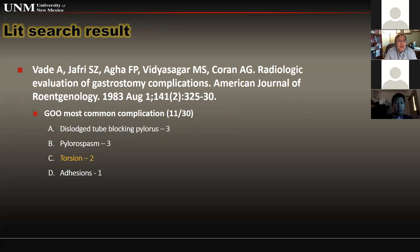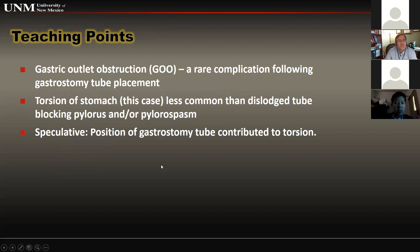A literature search found a 1983 AJR article on radiologic evaluation of gastrostomy complications. Gastric outlet obstruction was the most common complication at 11 out of 30 cases; torsion accounted for two of those 11, while dislodged tube blocking the pylorus and pylorus spasm were more common causes. People should know that gastric outlet obstruction is a rare complication following gastrostomy tube placement, and that positioning the tube too far downstream — as in this case — may contribute to torsion.